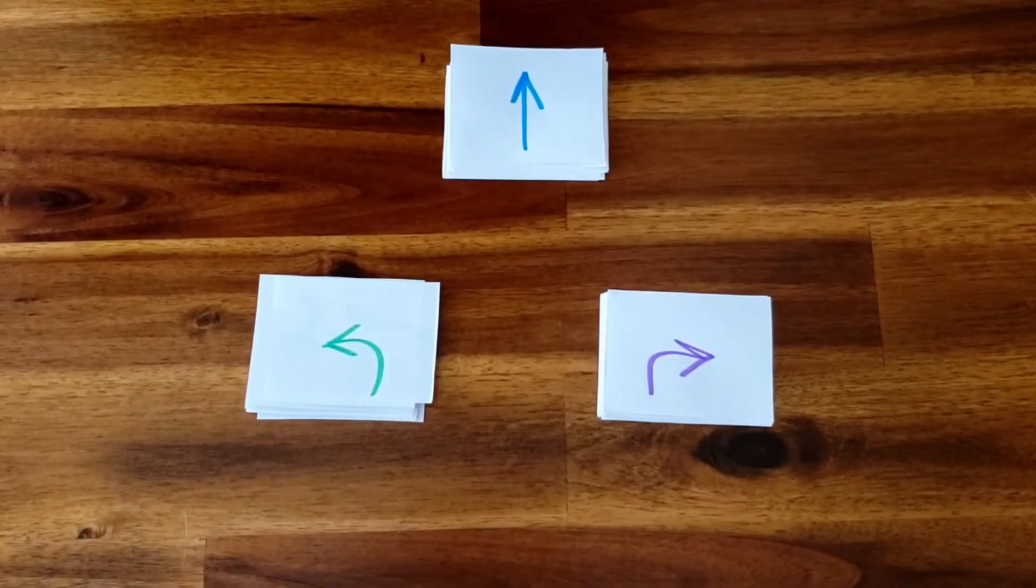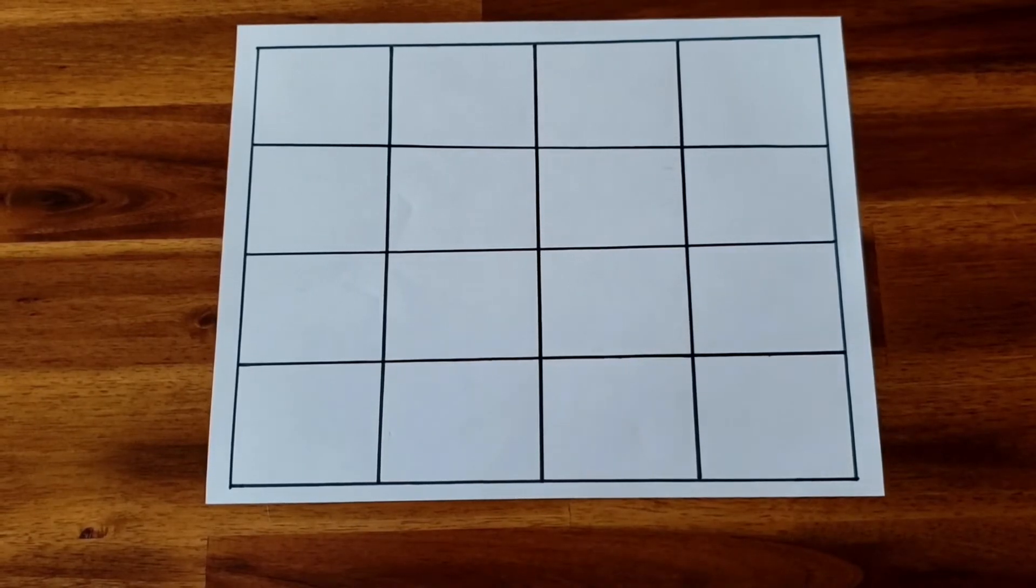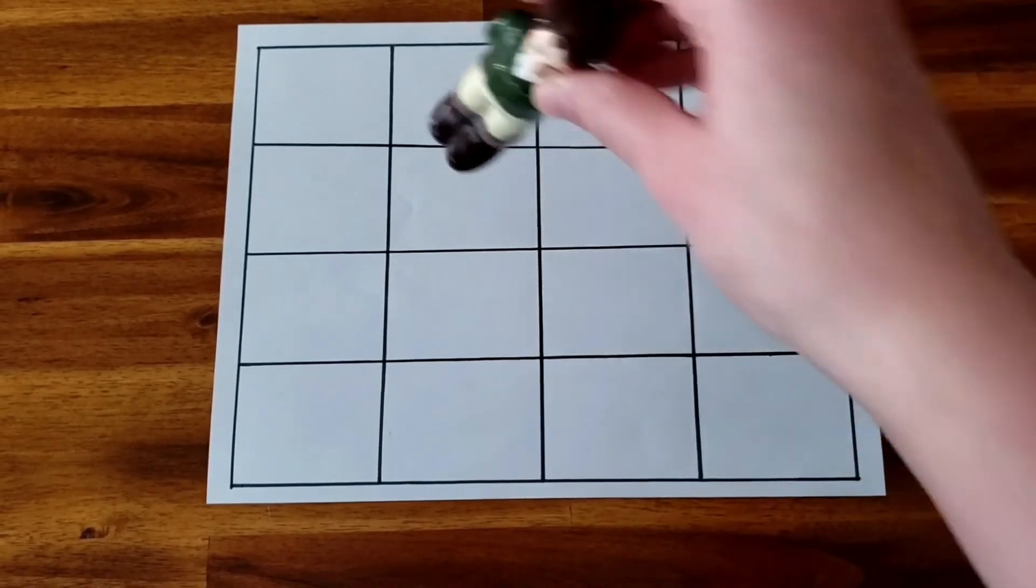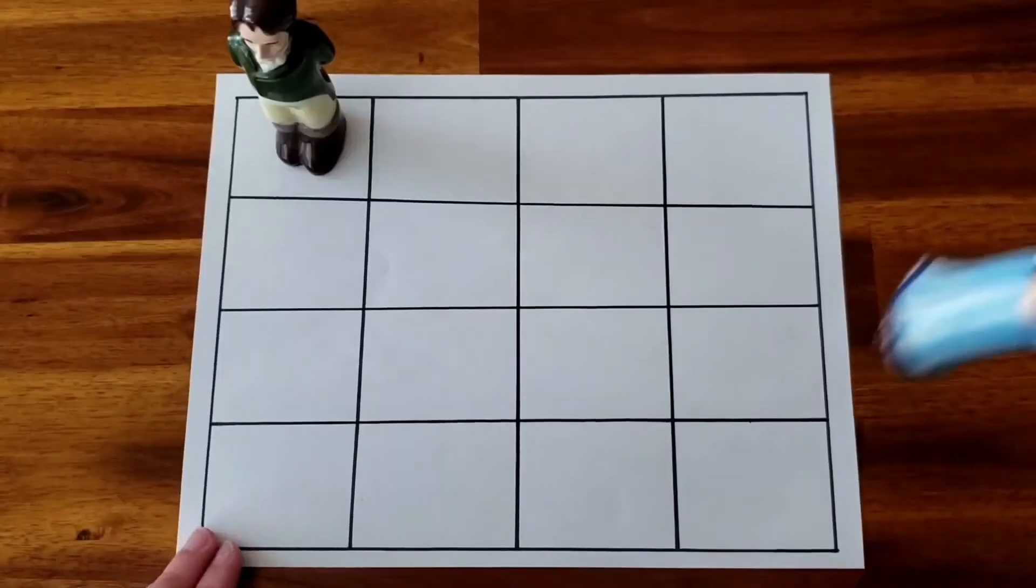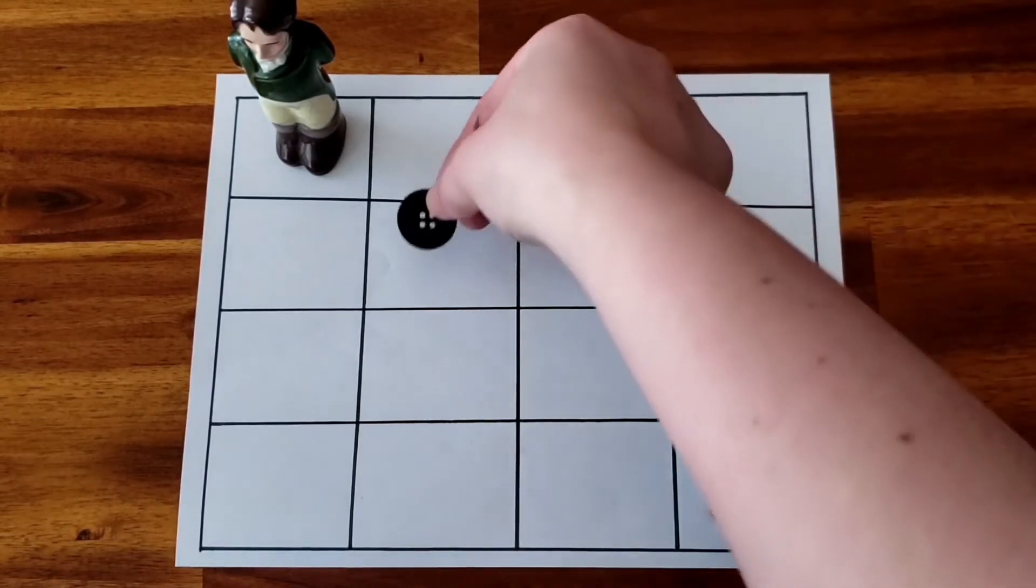Once your cards are all complete it's time to play. Designate two pieces, one to be the searcher and the other to be the person they're trying to meet up with. Then introduce other elements into the board to serve as obstacles you have to work around. If you have Legos you can build things, or you can just use regular household items like these buttons.